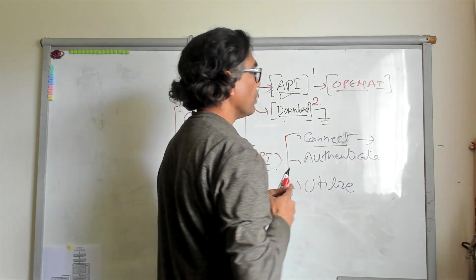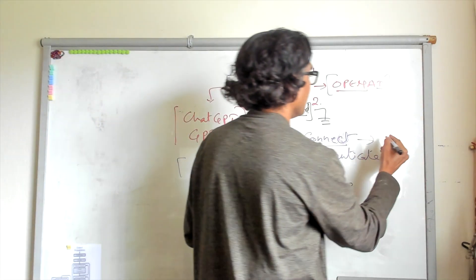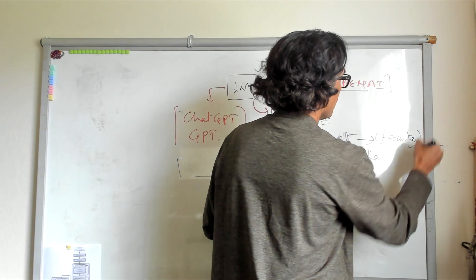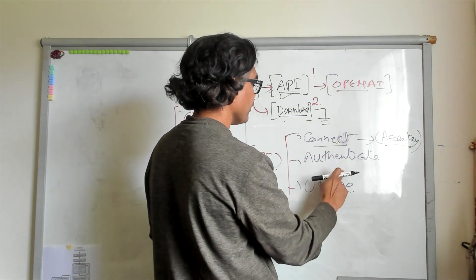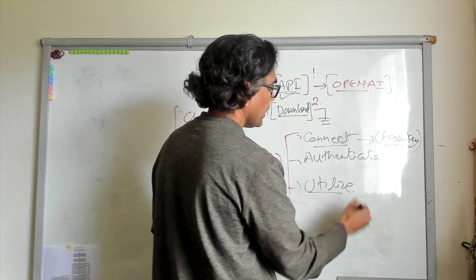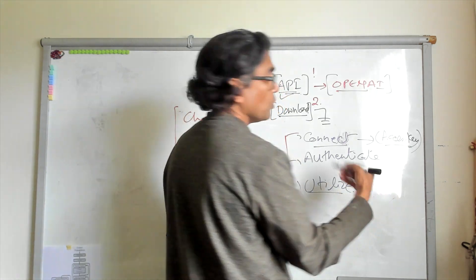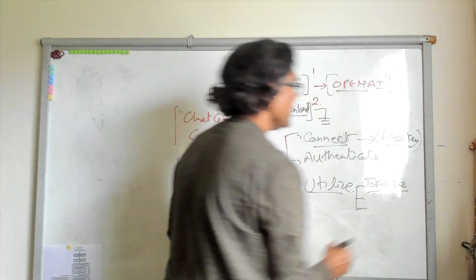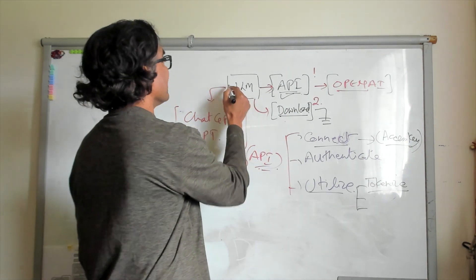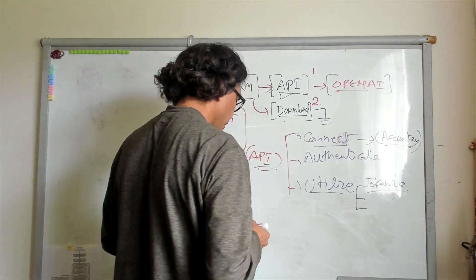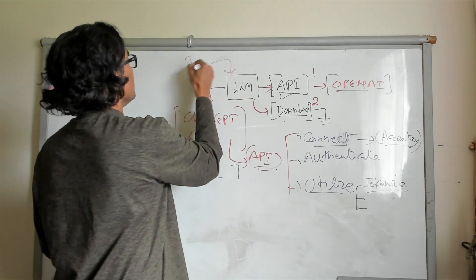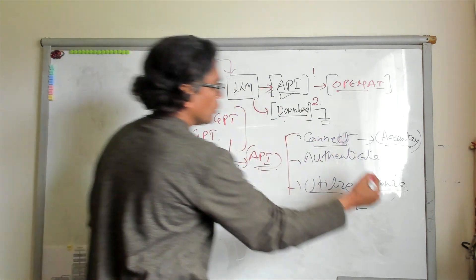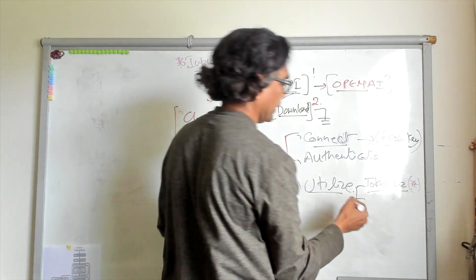In the connect step, you create a connection and provide your access keys. Once you have the access key, it is used to authenticate. After authentication, you can utilize — and when utilizing, you are going to first tokenize your data. All the input text must be tokenized. That is the very first thing you do.